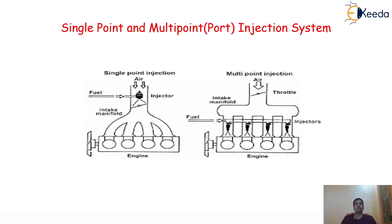We know a carburetor is a device used to supply the air and fuel mixture to the engine cylinder. But because of the different limitations of the carburetor, its use is now only limited to two-wheeler engines. Nowadays we are not using the carburetor for four-wheeler engines. That carburetor is replaced by one more device, called the injection system.